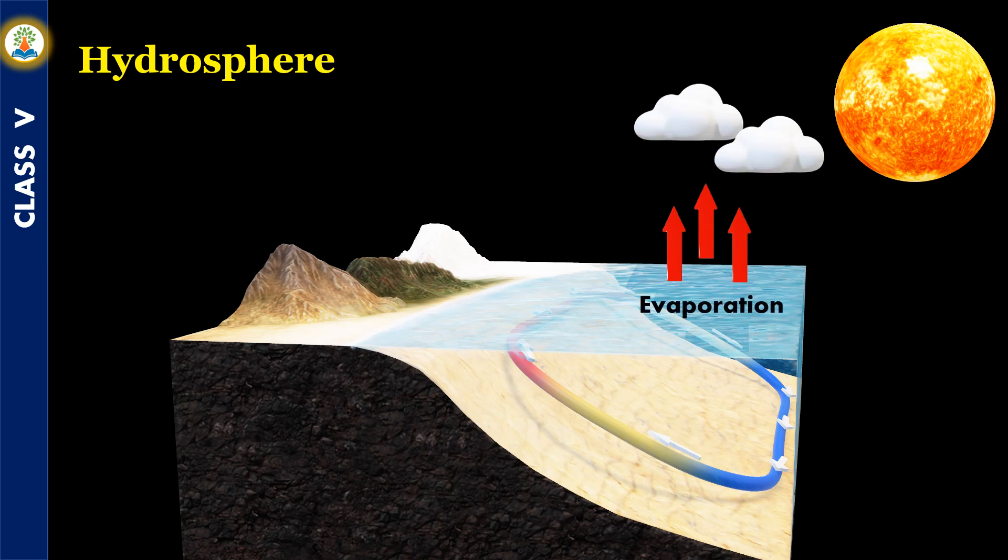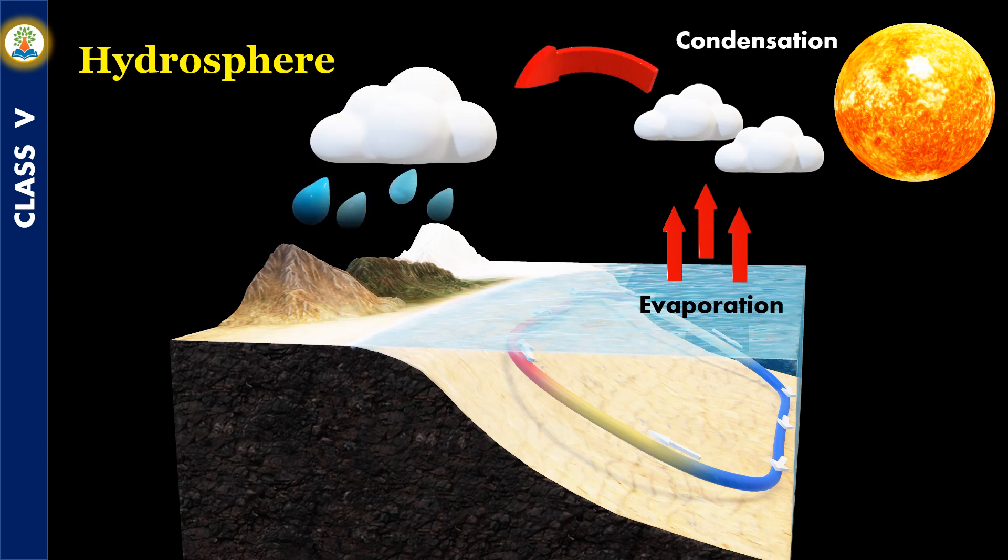When it reaches the sky, it cools down and changes back to water droplets. This process is known as condensation. When the water droplets cannot be retained by the clouds and they fall on the surface of the Earth in the form of rain, it is known as precipitation. Rainwater flows back into oceans, seas, and rivers, and the cycle continues. This movement of water is known as the water cycle.